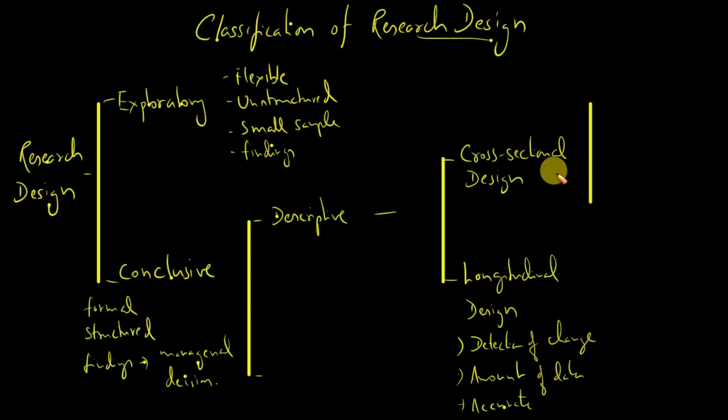This cross-sectional design can again be of two types: a single cross-sectional design or a multiple cross-sectional design. In a single cross-sectional design, one sample is drawn from the target population and information is obtained only once.